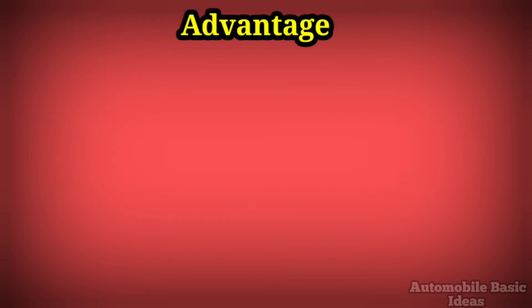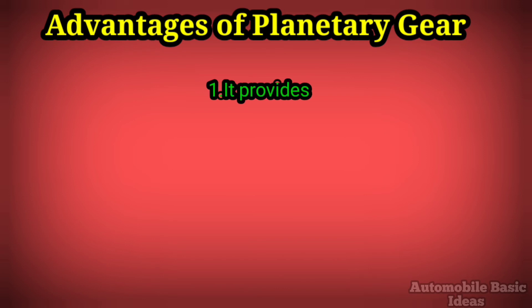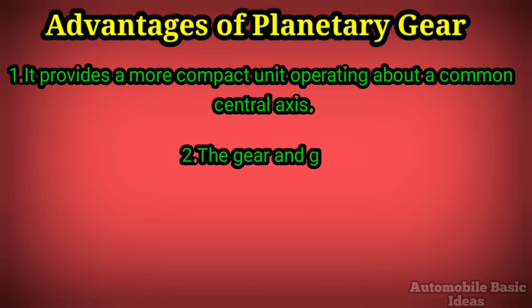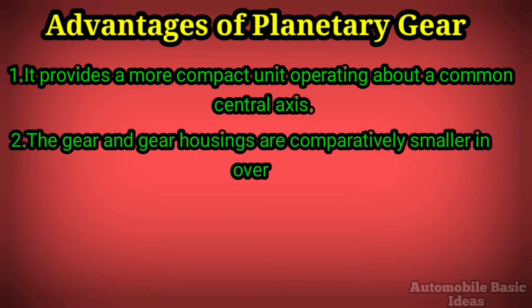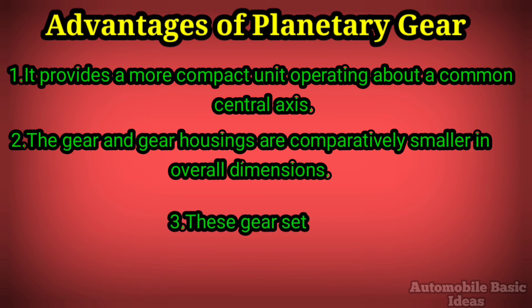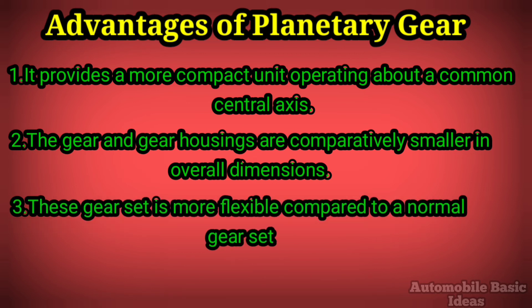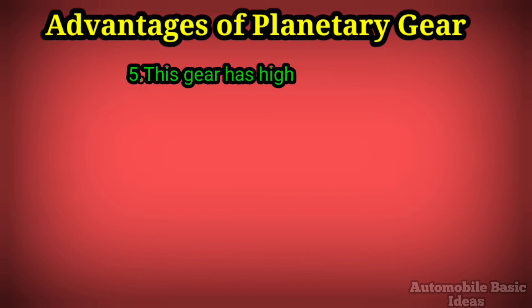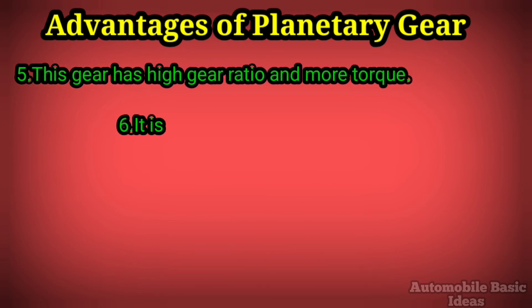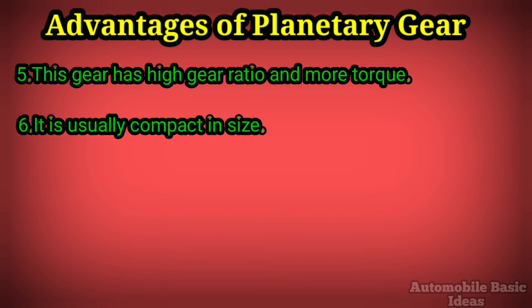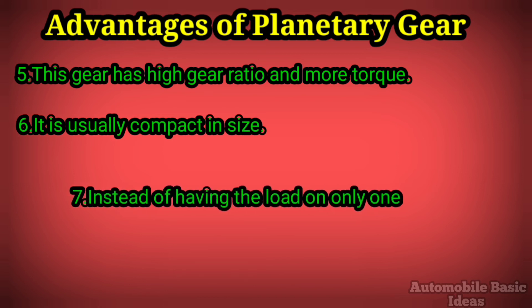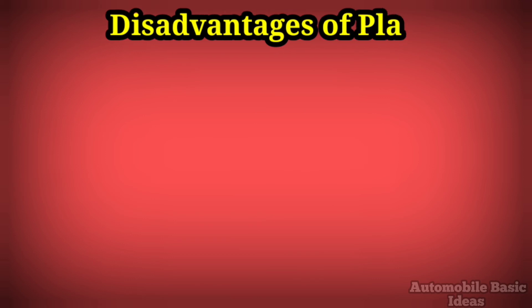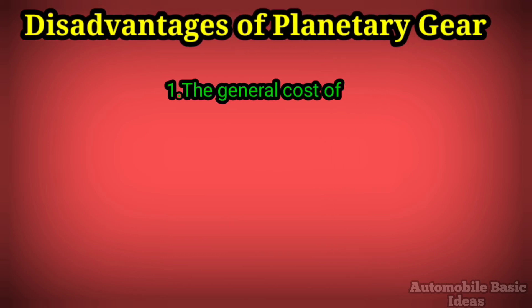Advantages of planetary gear. One: it provides a more compact unit operating about a common central axis. Two: the gear and gear housings are comparatively smaller in overall dimensions. Three: the gear set is more flexible compared to a normal gear set. Four: these gear trains occupy less space. Five: this gear has a high gear ratio and more torque. Six: it is compact in size. Seven: instead of having the load on only one pair of gears, it is distributed over several gear wheels.